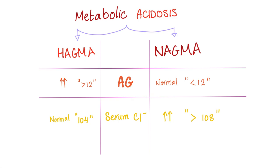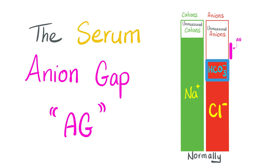If the anion gap is 12 or less, it's normal. As for serum chloride: in HAGMA, it's normal, about 104 milliequivalents per liter. But in NAGMA, it's high. So HAGMA has a high anion gap but a normal chloride. NAGMA has a normal anion gap but a high chloride. To understand why, let's talk about the serum anion gap.